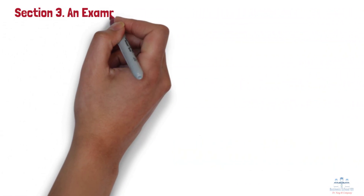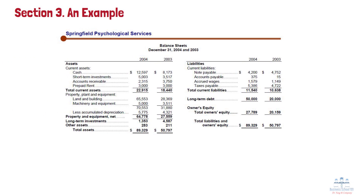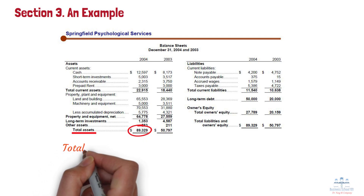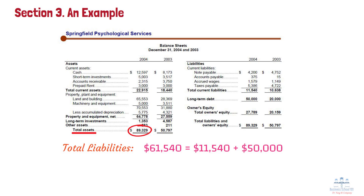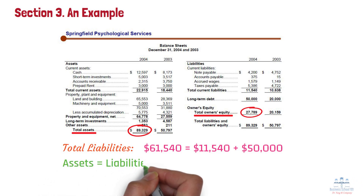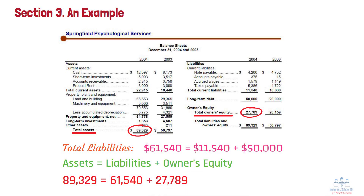Section 3: An Example. Looking at the balance sheet of Springfield Psychological Services at the end of 2004 and 2003, by the end of 2004 their total assets were $89,329, total liabilities were $61,540 ($11,540 plus $50,000), and total owner's equity was $27,789. Applying the balance sheet equation — assets equals liabilities plus owner's equity — $89,329 equals $61,540 plus $27,789. It balances perfectly, which is the key feature of a balance sheet: it must always add up correctly.